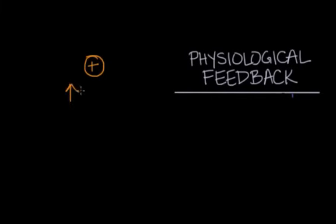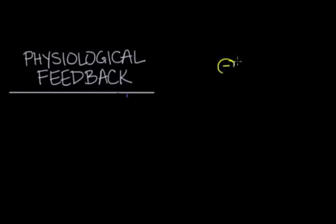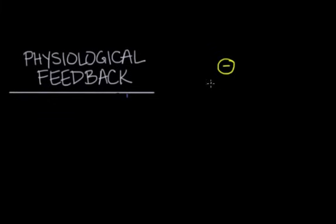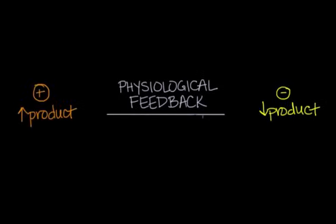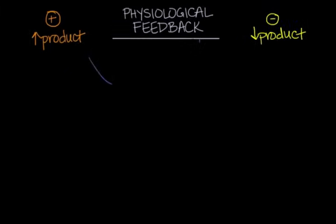The process will work to increase one product, which will then stimulate the production of another product, and so on. The opposite is negative feedback, or when the rate of process has to be controlled to prevent the accumulation of a product. Negative feedback works to decrease a product — if we have an accumulation of a product in our blood, we can't have it build up to excessive levels, as that could be really toxic. That's why negative feedback mechanisms are put into place to inhibit that process by decreasing the product.